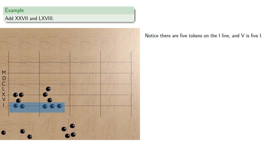So we might notice there are five tokens on the I line, and V is 5I. So we trade the five tokens on the I line for one token in the V space.